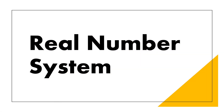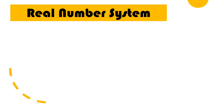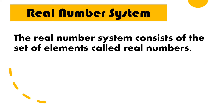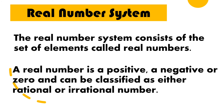Hello, welcome back. Our lesson is all about the Real Number System. Let us define the real number system. The real number system consists of the set of elements called real numbers. A real number can be positive, negative, or zero, and can be classified as either a rational or irrational number.